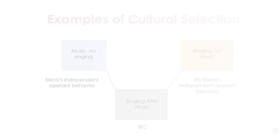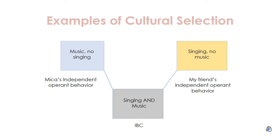For my example of cultural selectivity involving singing and music: my independent operant behavior is that I am playing music but not singing, and my friend's independent operant behavior is that she is singing but has no music. When they come together, those interlocking behavioral contingencies result in both singing and music, which is beneficial for both of us.